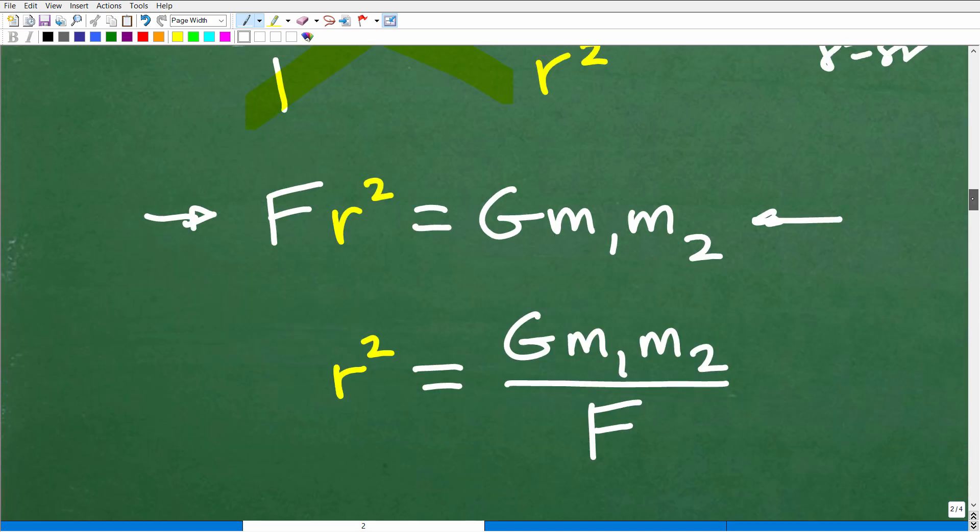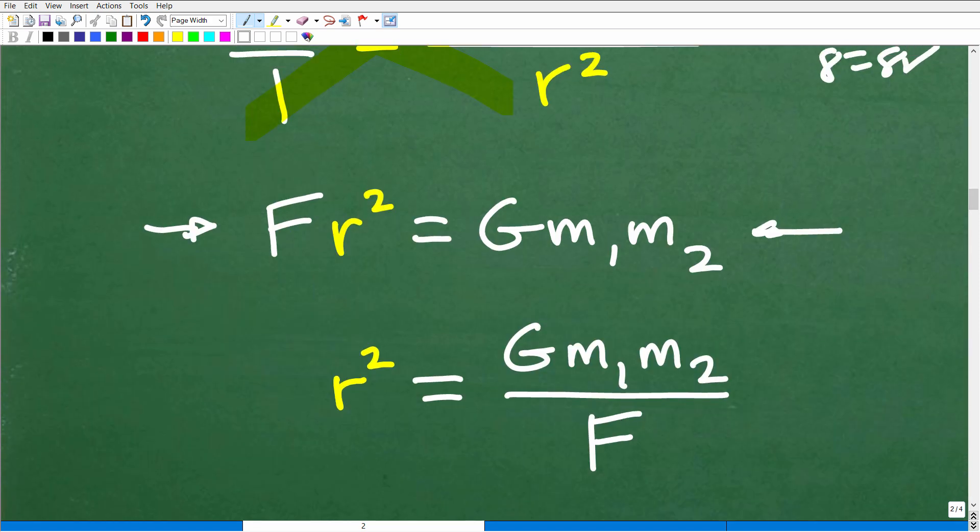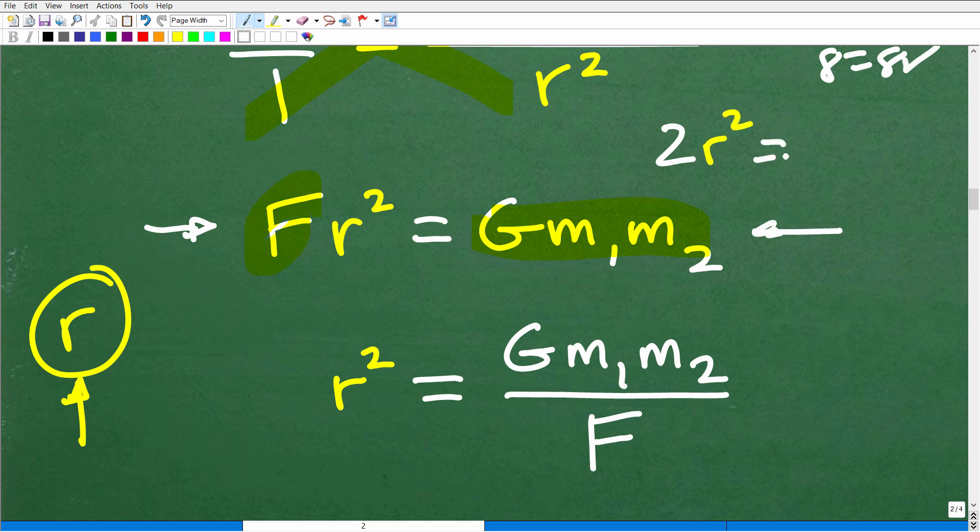F times R squared is this, and 1 times G times M1 times M2 is this right here. We're keeping an eye on our prize. And what are we now focusing on in terms of a variable? We're focusing on R. We're concentrating and we're like, I got a whole bunch of variables going on here, but I'm only thinking of R as the variable. So all this other stuff is just like numbers.